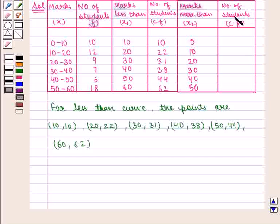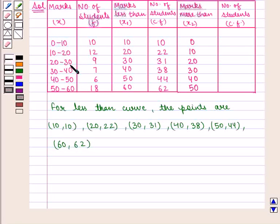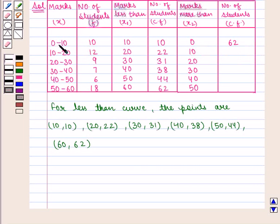Now we shall find the cumulative frequency for the marks more than series. The number of students for marks more than 0 is the sum of all students: 10 plus 12 plus 9 plus 7 plus 6 plus 18, which equals 62. The number of students who got marks more than 10 is 62 minus 10, which equals 52.